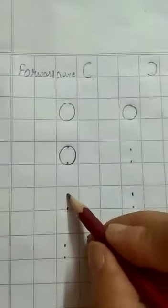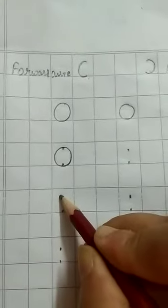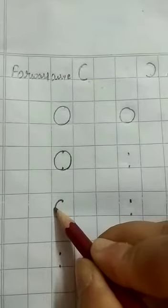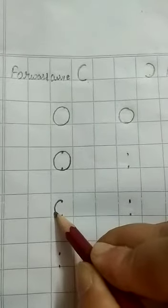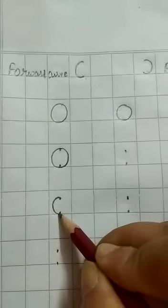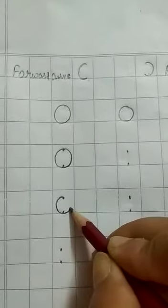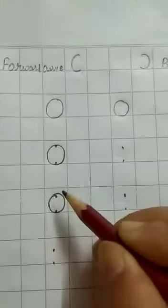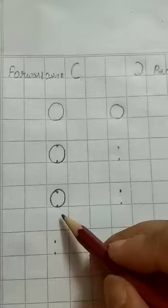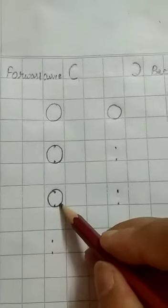Draw a curve starting from the top, facing forward, and then a curve facing backward. This is a zero.